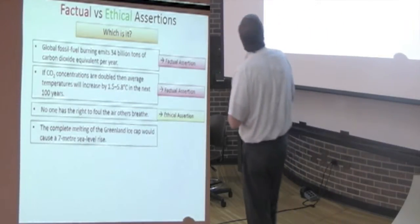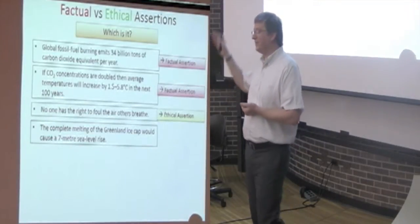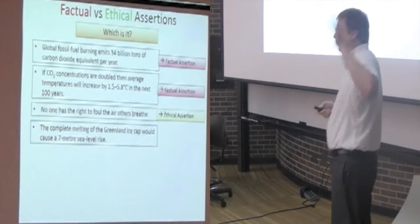How about this one? A complete melting of the Greenland ice cap would cause seven meters sea level rise. What do you say, factual? Factual? Factual, you can test the poll.